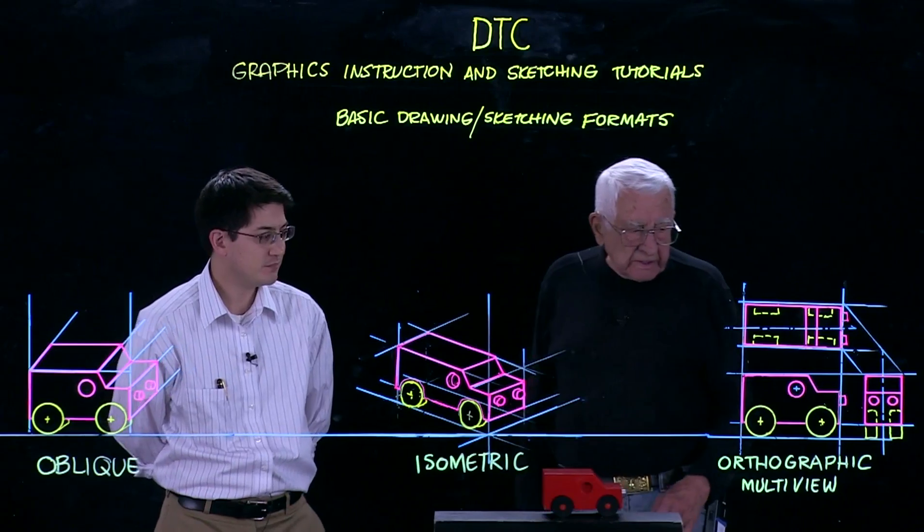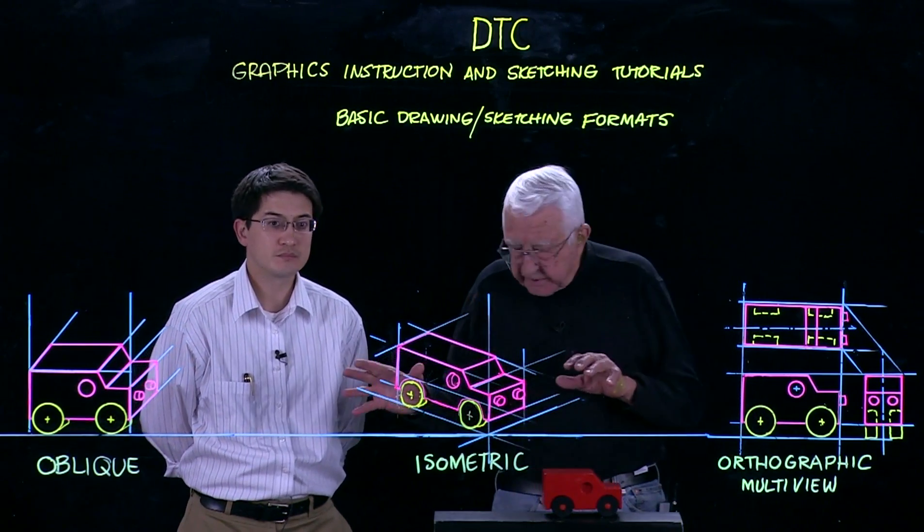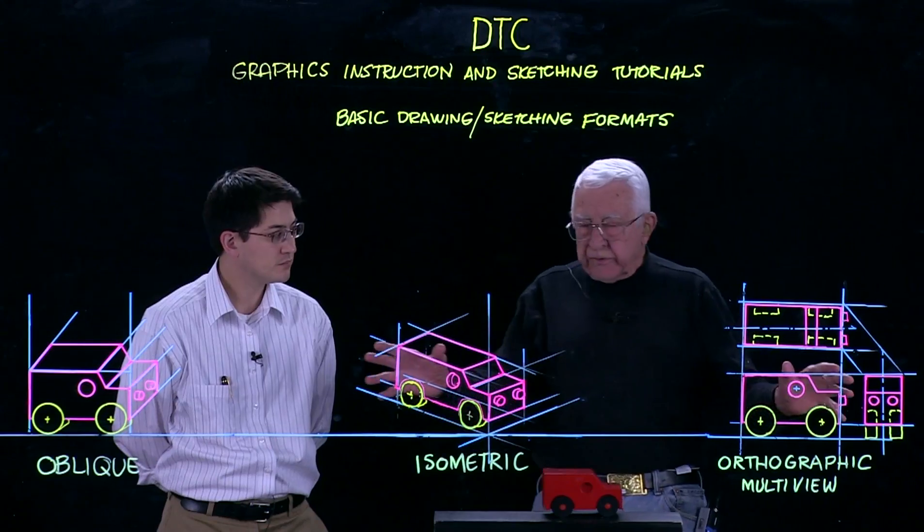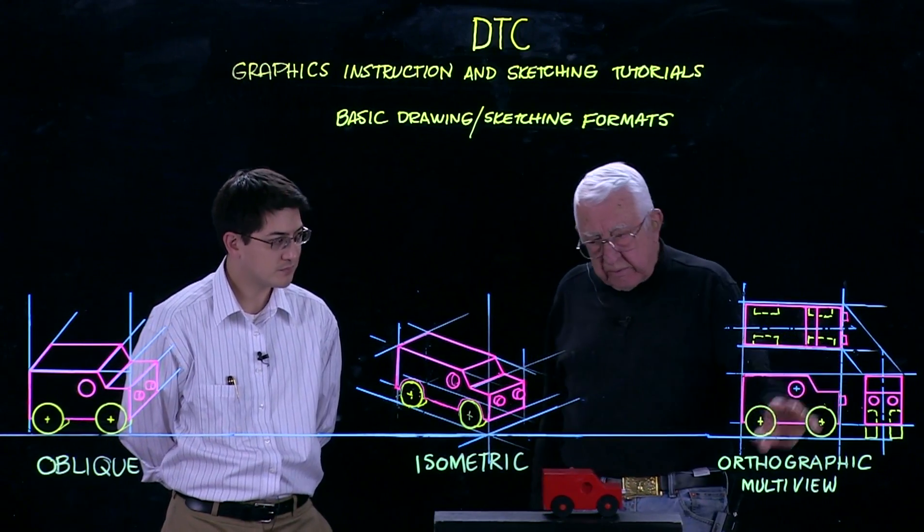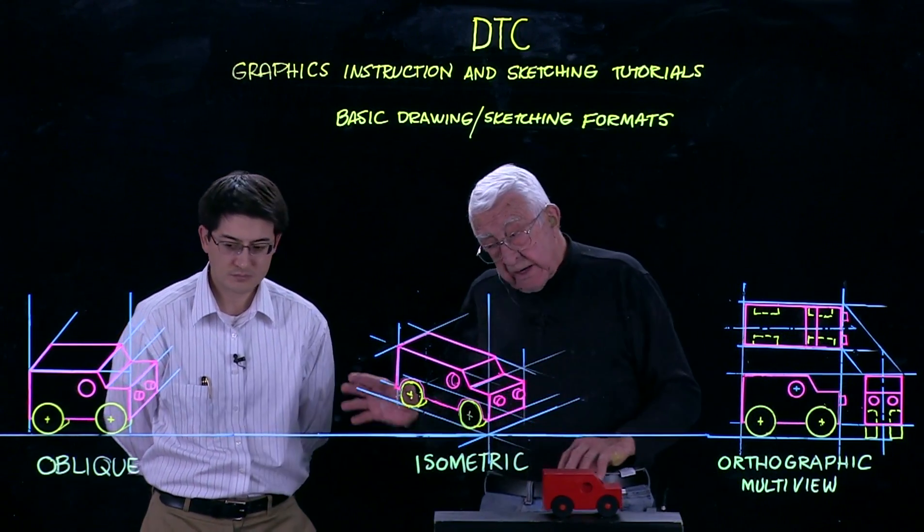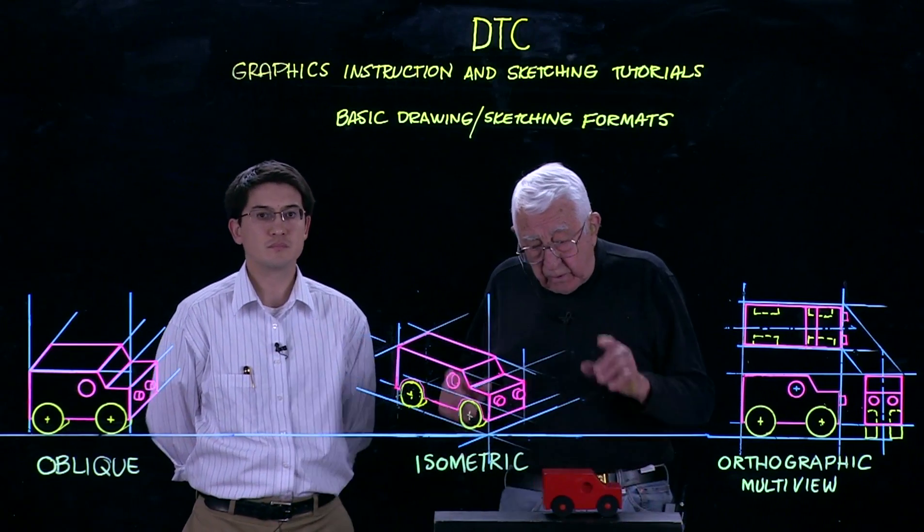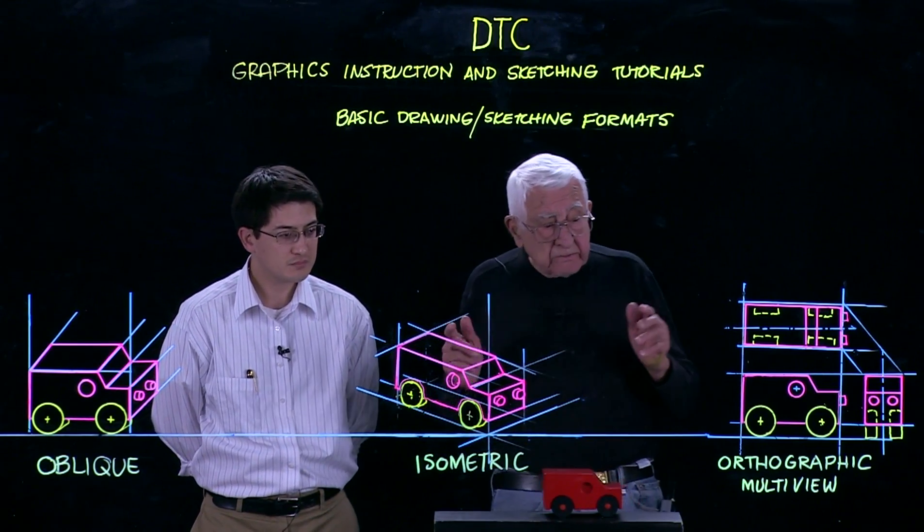An isometric is as in the case of the oblique driven by dimension. All three dimensions are critical for multi-view, for isometric and oblique as well. In terms of isometric which means equal measure...